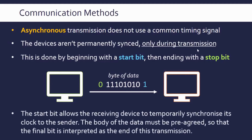This point is important: the devices are synced up during transmission. When no data is being sent they're not synced at all — they have separate clocks. But they do need to sync during transmission because the sending device is sending data at a set rate. Once the start bit arrives, the receiver can time the gap between the start bit and the first actual data bit, and use that to sync its own clock to operate at the same rate as the sending device. Otherwise it might miss bits or miscount how many bits are in the message.